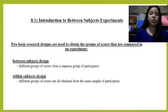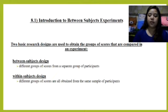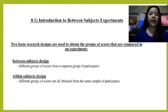First, Introduction to Between Subject Experiment. We have two kinds of experimental design. First is Between Subject Design, which involves different groups of scores from separate groups of participants. Between Subject Design is a type of design where you compare scores from separate groups. While Within Subject Design is where different groups of scores are all obtained from the same sample of participants.